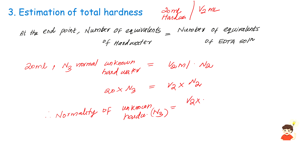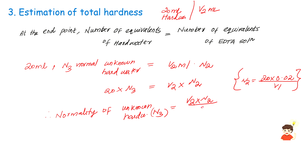Since we already have the value of N2 as 20 into 0.02 divided by V1, we substitute: N3 equals V2 into (20 into 0.02 divided by V1) divided by 20, which simplifies to 0.02 into V2 divided by V1.